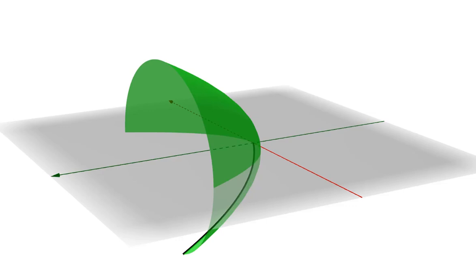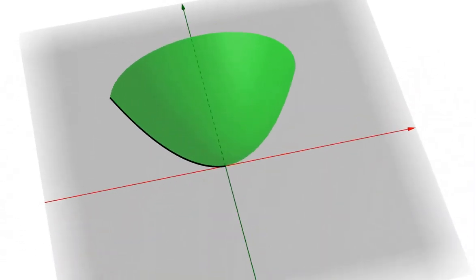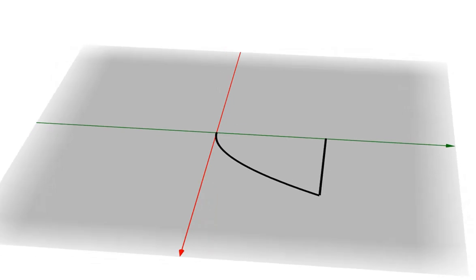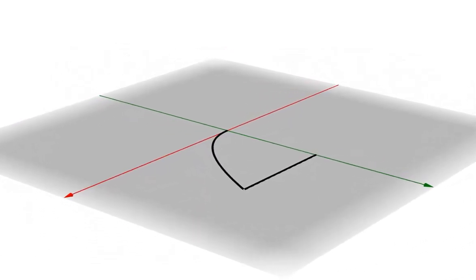Similar to before, let's cut off this graph when y is equal to 1, and spin it around the y-axis so that it outlines a solid shape. What's the volume of this shape?